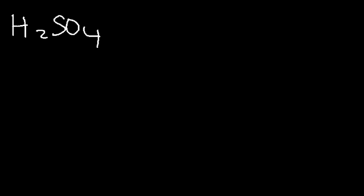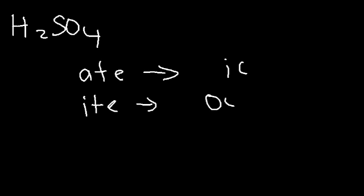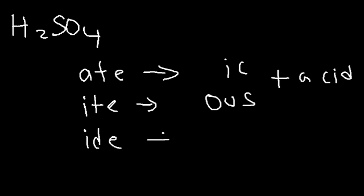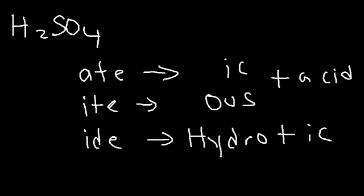In this video we're going to focus on naming acids. So if you want to name H₂SO₄, how would you do it? First you need to know some rules. If it contains a polyatomic ion with the word '-ate', all you need to add is '-ic'. If it has a polyatomic ion with the word '-ite', replace it with the suffix '-ous'. And if it's a monatomic ion ending in '-ide', add the prefix 'hydro-' plus the suffix '-ic'.